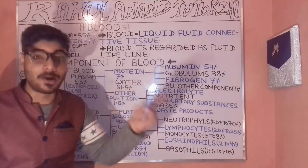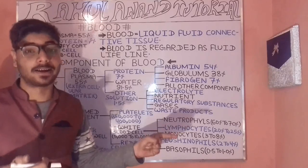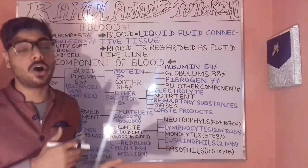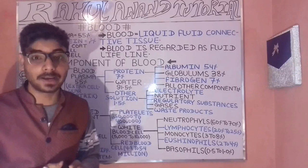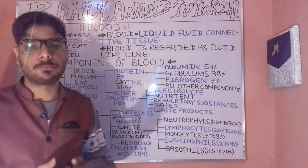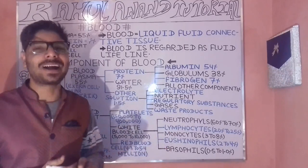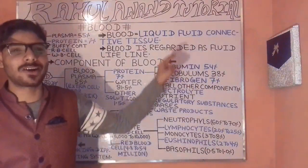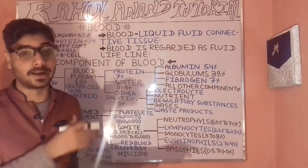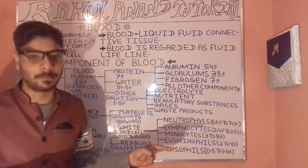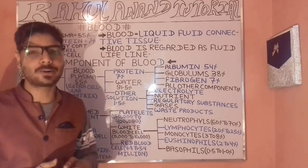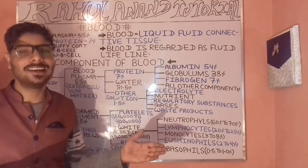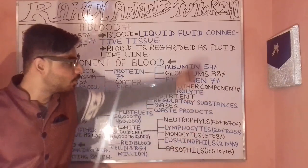Arteries carry oxygenated blood while veins collect deoxygenated blood containing carbon dioxide. Microcapillaries radiate blood toward different regions of the body. Veins collect deoxygenated blood and return it through the passage of the heart.